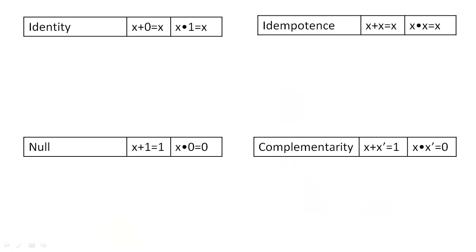One tool among many tools that we can use to simplify expressions is the Boolean identities. Here I present four of the basic identities.